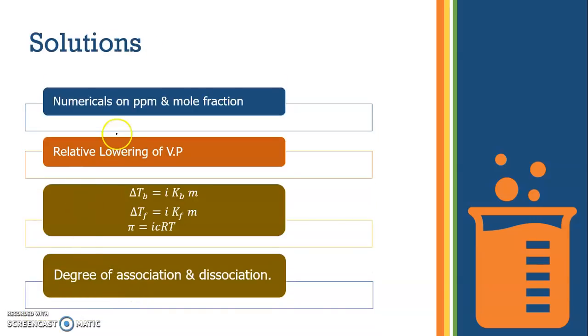Next chapter is solution. From solution, do numericals on PPM and mole fraction, relative lowering of vapor pressure. Please remember all these formulas. Very, very important. Practice all numericals on these formulas. And as I told you, degree of association and dissociation always come in your paper.